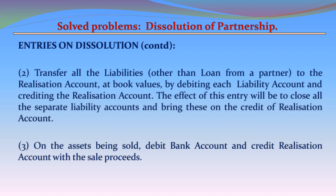Entry 2: Transfer all the liabilities, other than loan from a partner, to the realization account at book values by debiting each liability account and crediting the realization account. The effect of this entry will be to close all the separate liability accounts and bring those liabilities on the credit side of the realization account.